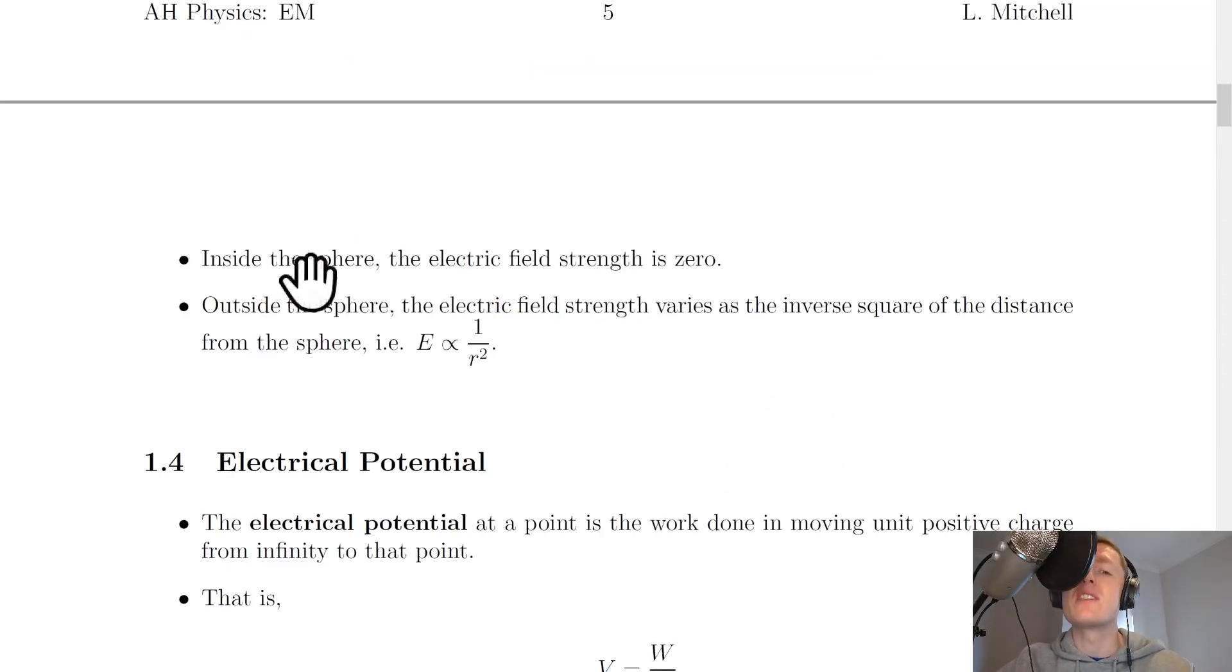So what we've just seen is that inside the sphere, the electric field strength is zero. Outside the sphere, the electric field strength varies as the inverse square of the distance from the sphere, i.e. E is proportional to 1 over R squared. That's all for this video folks, thanks for watching.